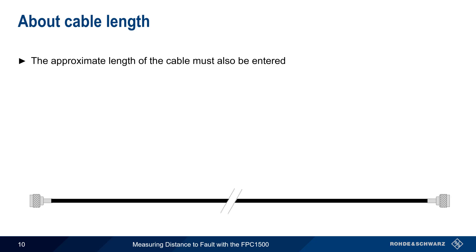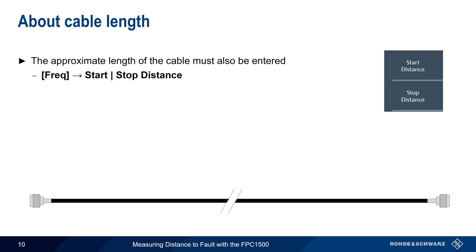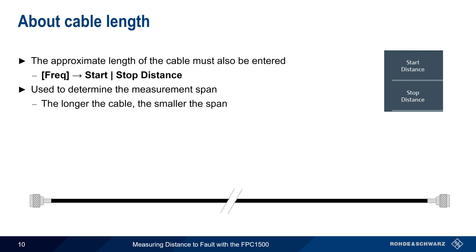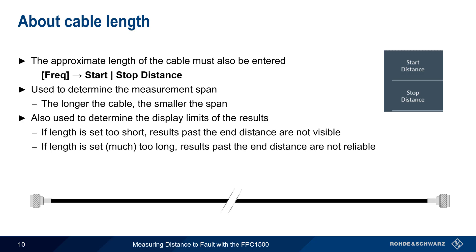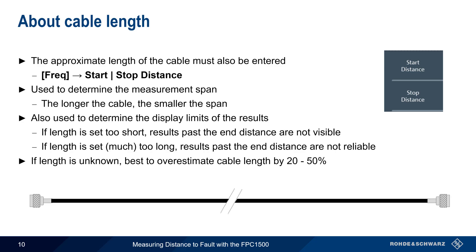In addition to the cable model, the approximate length of cable must also be entered. This is done using the Frequency hard key and then Start Distance and Stop Distance. The main reason why cable length must be specified is that length is used to determine the measurement span or frequency range — the longer the cable, the smaller the measurement span. The other reason is that it determines the display limits on the results. If the length is set too short, we won't be able to see any cable faults beyond this distance. Setting the length too long is also undesirable, since any results past the end distance would not be reliable. In most DTF measurement applications, the approximate cable length is known, but if the length has to be estimated, it's usually best to overestimate.